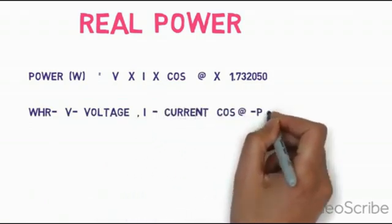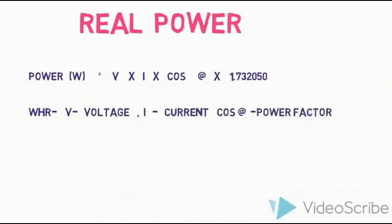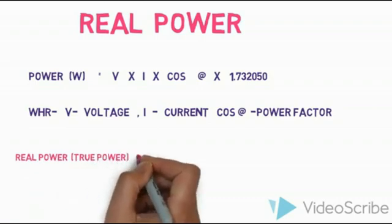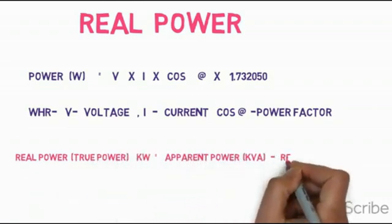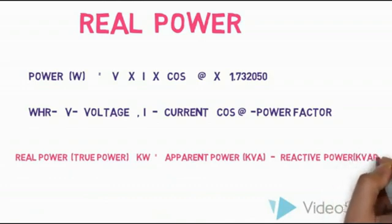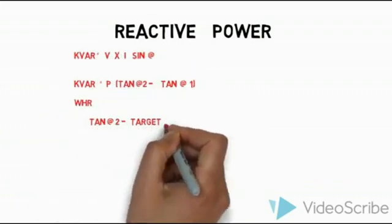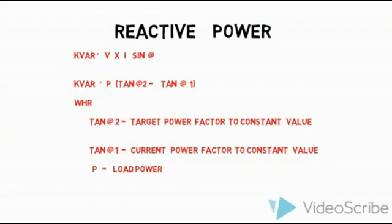Alter the power factor. Next, real power — true power in kW. Apparent power minus reactive power. Apparent power in kVAR. Real power formula: V times I times sin phi. The other form is P times (tan theta 2 minus tan theta 1).